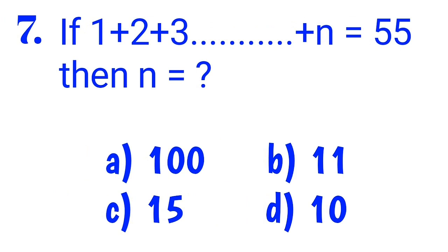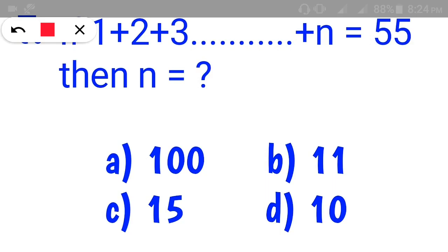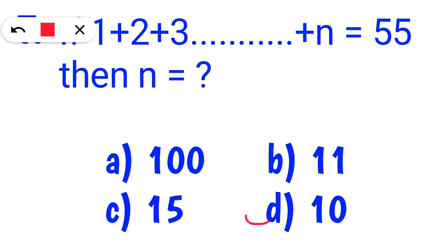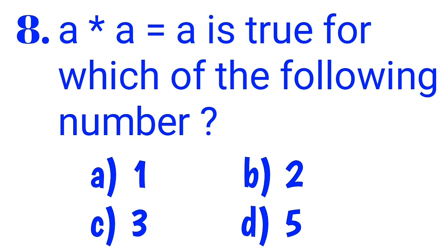If 1 plus 2 plus 3 plus … plus n equals 55, then n equals what? We will write the correct answer. Also: for which of the following numbers is a times a equal to a not true?